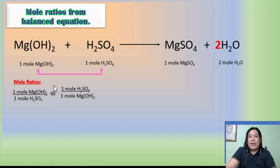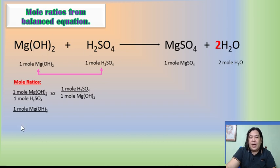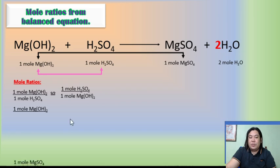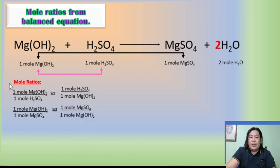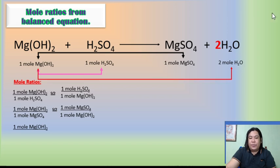We don't leave magnesium hydroxide yet because we need to construct mole ratios pairing it with all other substances. So re-write one mole of magnesium hydroxide, and this time pair it with magnesium sulfate: one mole Mg(OH)₂ over one mole MgSO₄, which is stoichiometrically equivalent to one mole MgSO₄ over one mole Mg(OH)₂. Then also: one mole Mg(OH)₂ over two moles of water, stoichiometrically equivalent to two moles water over one mole Mg(OH)₂.